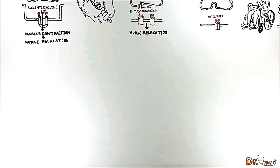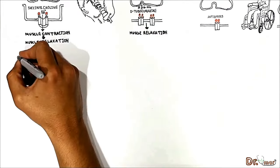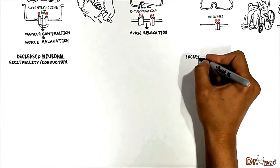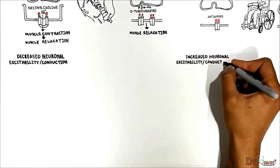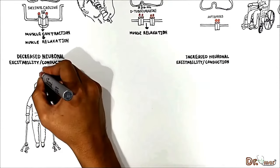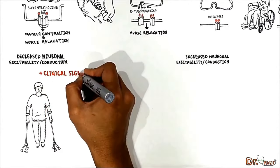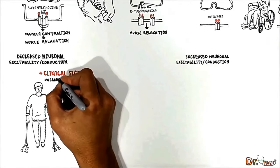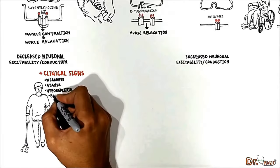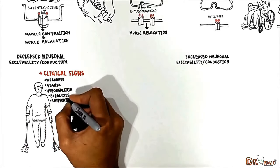Now let's recap and add some points important for clinical purposes. First, let's talk about decreased neuronal excitability and conduction. Clinical signs of decreased neuronal excitability and conduction could include weakness, ataxia, hyporeflexia, paralysis, and sensory deficit.